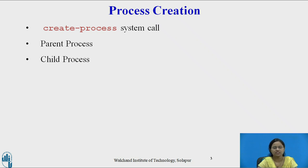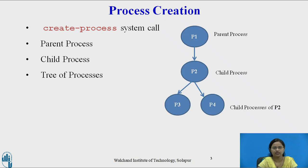The child process can also execute the CreateProcess system call and a tree of processes can be formed, as shown in this figure. Process P1 is a parent process who invokes CreateProcess to create process P2, which is a child process. Then P2 can again invoke CreateProcess to create two child processes P3 and P4, and in this way a tree of processes can be formed.